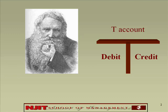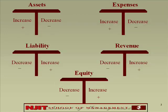Now it becomes more confusing. These are the laws set up by Pacioli in 1492. For an asset, an increase is shown on the left and decrease on the right. For an expense, an increase is shown on the left and decrease on the right. For a liability, a decrease is shown on the left and an increase on the right. For revenue, a decrease is shown on the left and increase on the right. For equity, a decrease is shown on the left and an increase on the right.